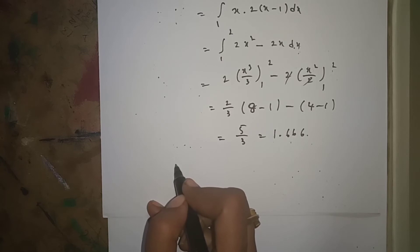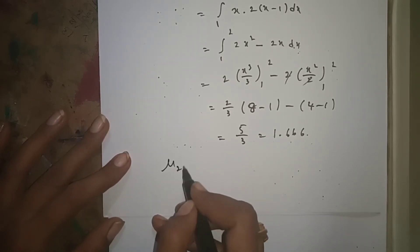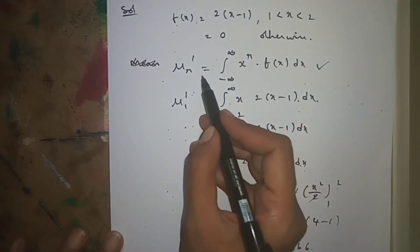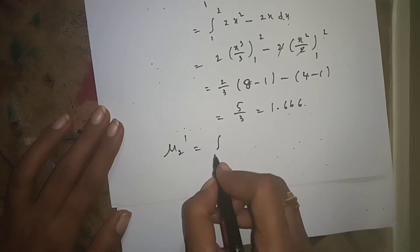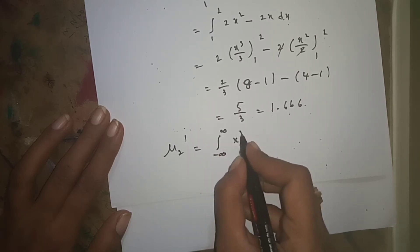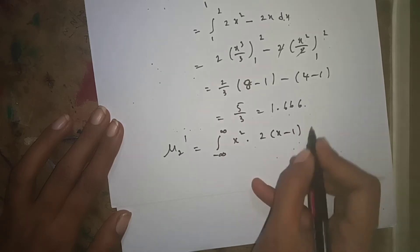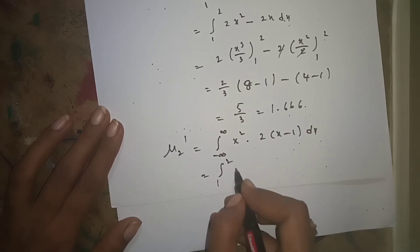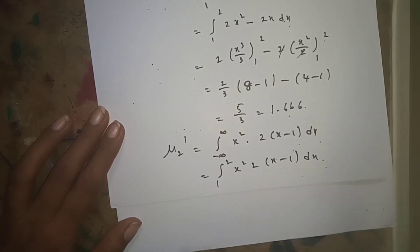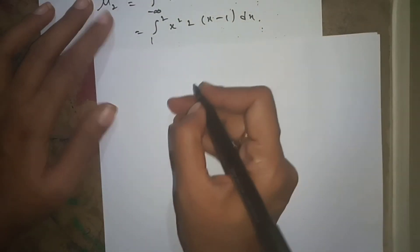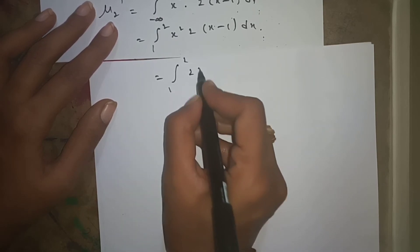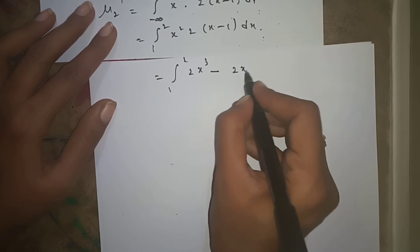For μ'_2, we substitute r=2: μ'_2 = integral from 1 to 2 of x²·2(x−1)dx = integral from 1 to 2 of 2x³−2x² dx. Multiplying out and integrating, applying the lower and upper limits, we get the integral from 1 to 2 of 2x³−2x² dx.